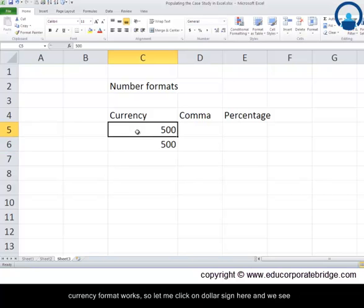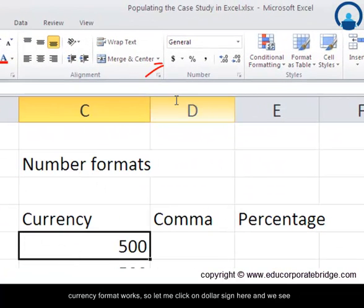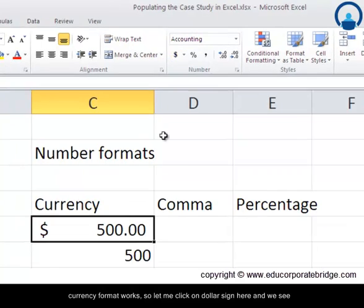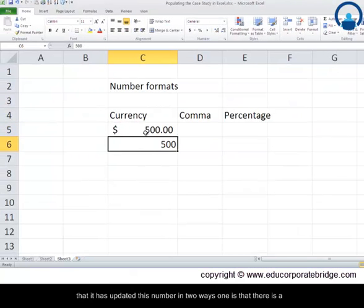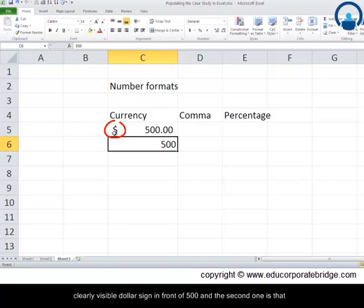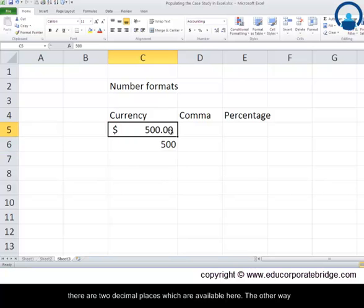Let me click on the dollar sign here, and we see that it has updated this number in two ways. One is that there's a clearly visible dollar sign in front of 500, and the second one is that there are two decimal places which are available here.